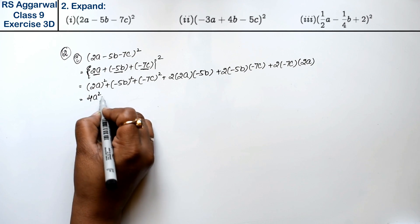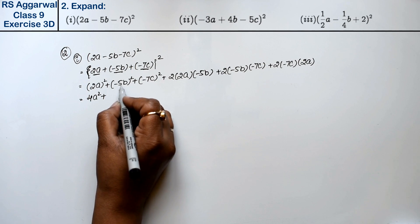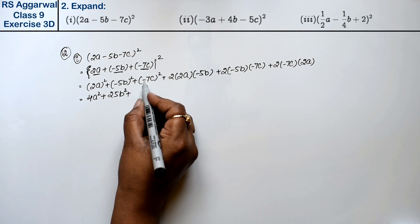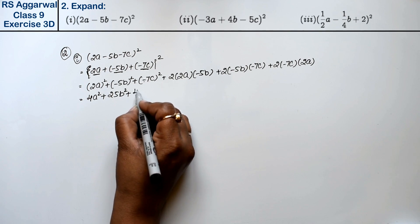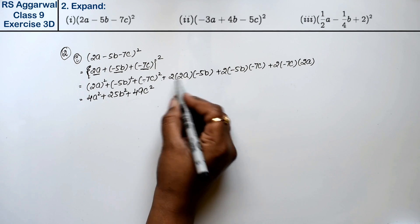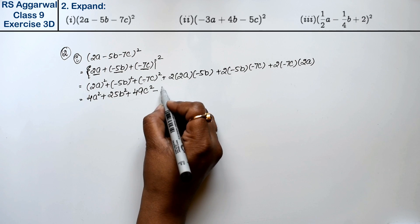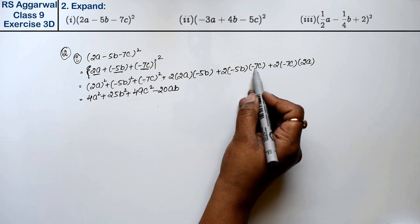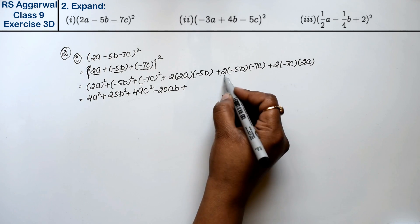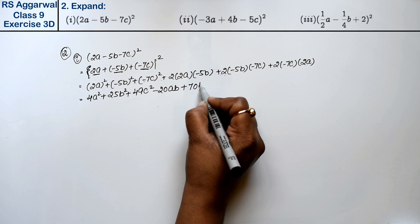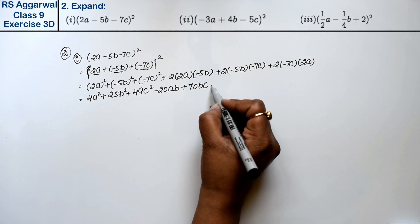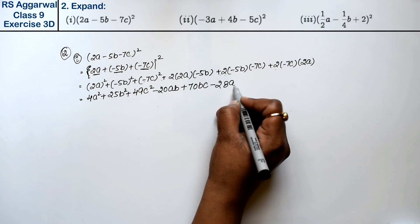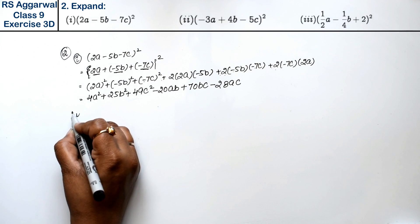Calculating each term: 2 squared is 4A square, minus 5 squared is 25B square, minus 7 squared is 49C square. Then 2 times 2A times minus 5B gives minus 20AB. Minus minus plus gives plus 70BC. And minus minus gives plus 28AC. So the answer for part 1 is: 4A² + 25B² + 49C² − 20AB + 70BC + 28AC.